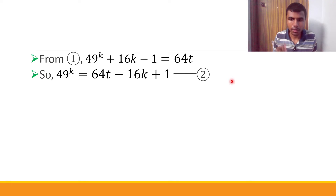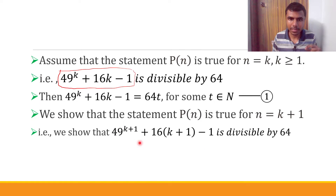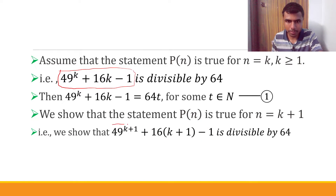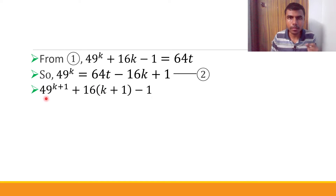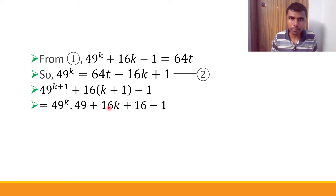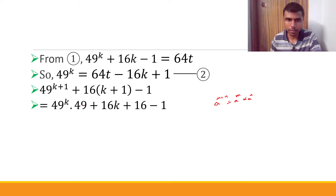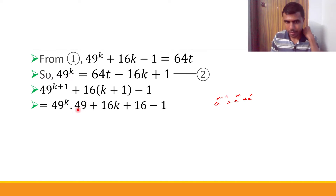We have to show this expression is divisible by 64, meaning we need to write it as 64 times something. Let's get started. The expression is 49^(k+1). Now 49^(k+1) can be written as 49^k × 49^1, because a^(m+n) = a^m × a^n. So this is 49^k × 49. Now, what is 49^k? From equation (2), 49^k = 64t - 16k + 1.